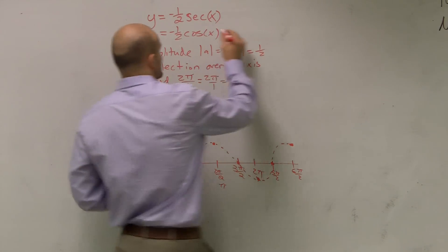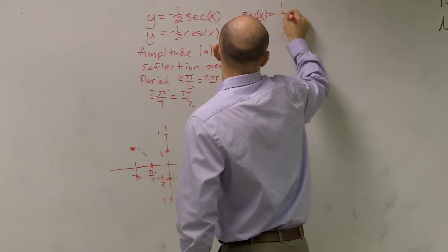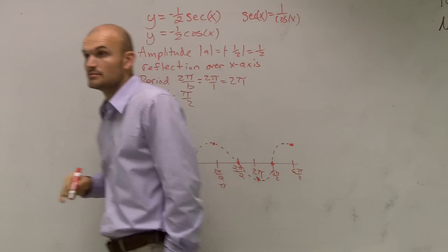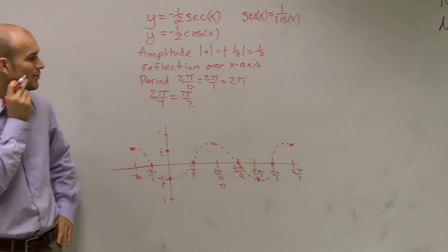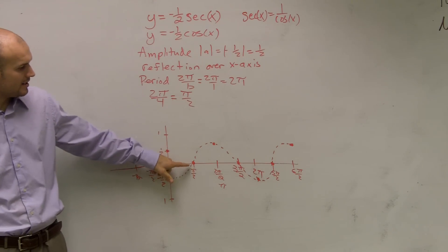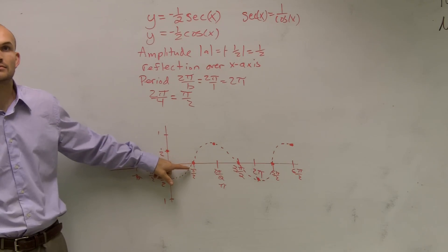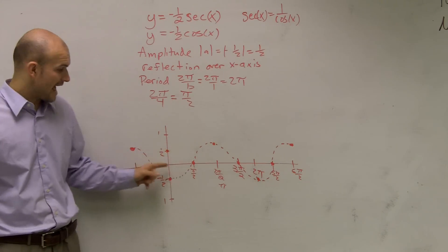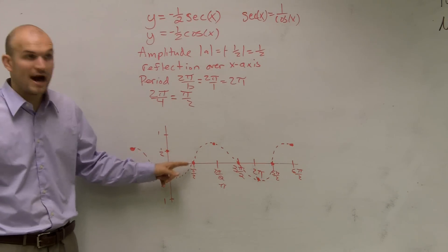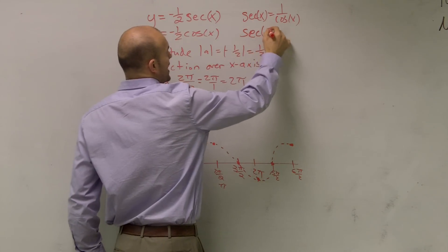A couple things you need to remember about cosine and secant. Secant of x is equal to 1 over cosine of x, right? If you look at this point, what is my y value at this point? Zero, right? x equals π over 2, the y value is 0. So if I ask for secant of π over 2, that's 1 over the cosine value of π over 2. The cosine value of π over 2 is 0.